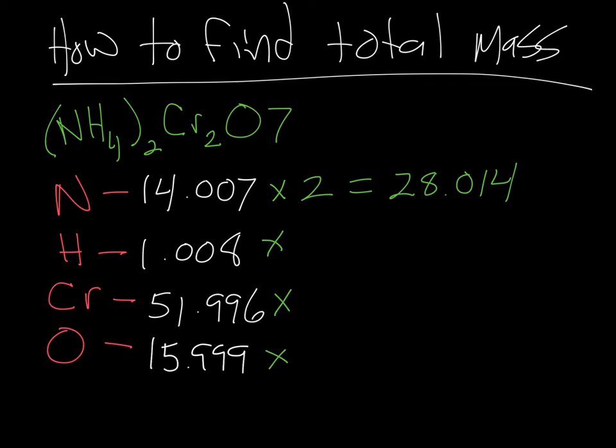Now, if I look here, I have two times everything in the parentheses. So that's two times four is eight hydrogens, which gives me a total mass of hydrogen of 8.064. And then I have two chromiums. So I'm going to multiply by two, which gives me a mass of 103.992 for my chromiums.